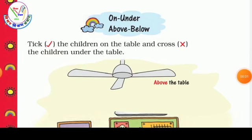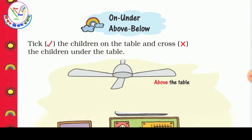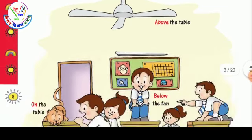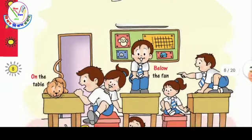Hello bachyo! Today we will learn about on, under, above, and below. We have a picture and we have to circle the children on the table and cross the children under the table.